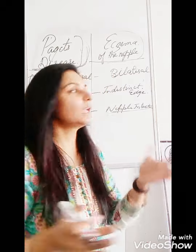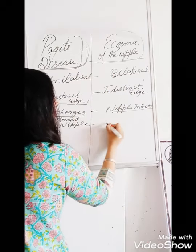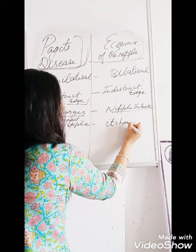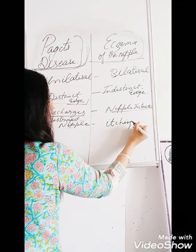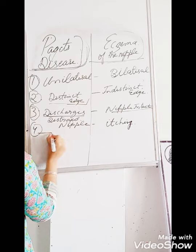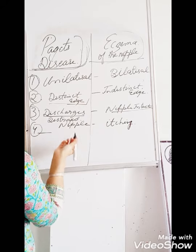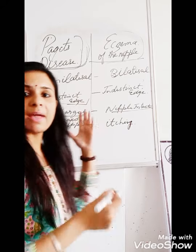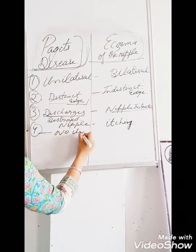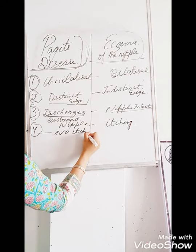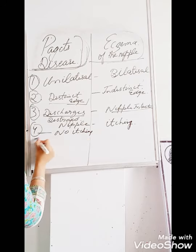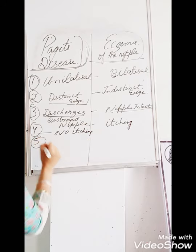The fifth difference is itching. As the name suggests, eczema of the nipple presents with itching — it is obviously itchy. But in the case of Paget's disease of the nipple, there is no itching.